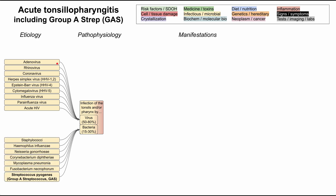These are the most common bacterial etiologies of acute tonsillopharyngitis. The most common, in bold, is Streptococcus pyogenes, also called group A streptococcus — sometimes abbreviated as GAS. Other common bacteria include Staph species, H. influenzae, Neisseria gonorrhoeae, C. diphtheriae, Mycoplasma pneumoniae, and some Fusobacterium species. But by far the most common of the bacteria is group A strep. Again, to clarify, most of the time an acute tonsillopharyngitis has a viral picture for both adults and children.